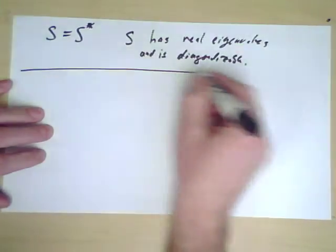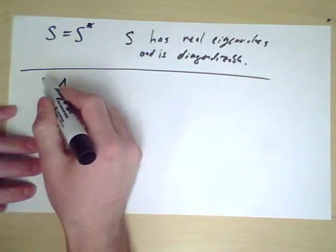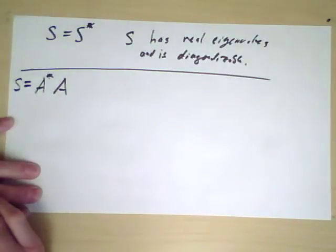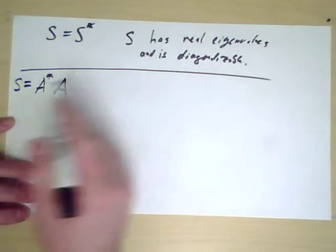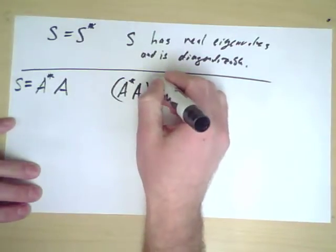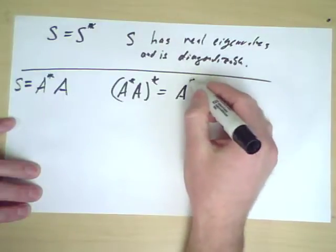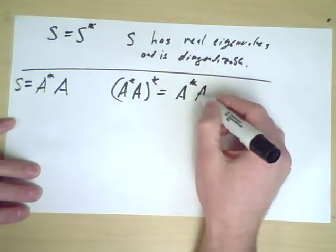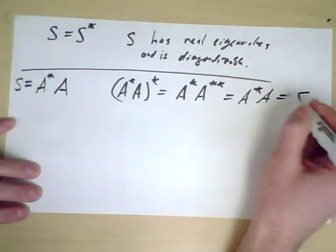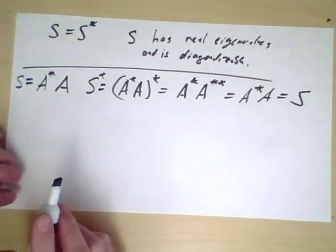So if I have a matrix A, I can consider A star A and call that S. Now it's easy to check that A star A is itself self-adjoint. Because after all, because of the order flip that happens when you adjoin a product of matrices, A star A is self-adjoint. So for any matrix A, A star A is self-adjoint.